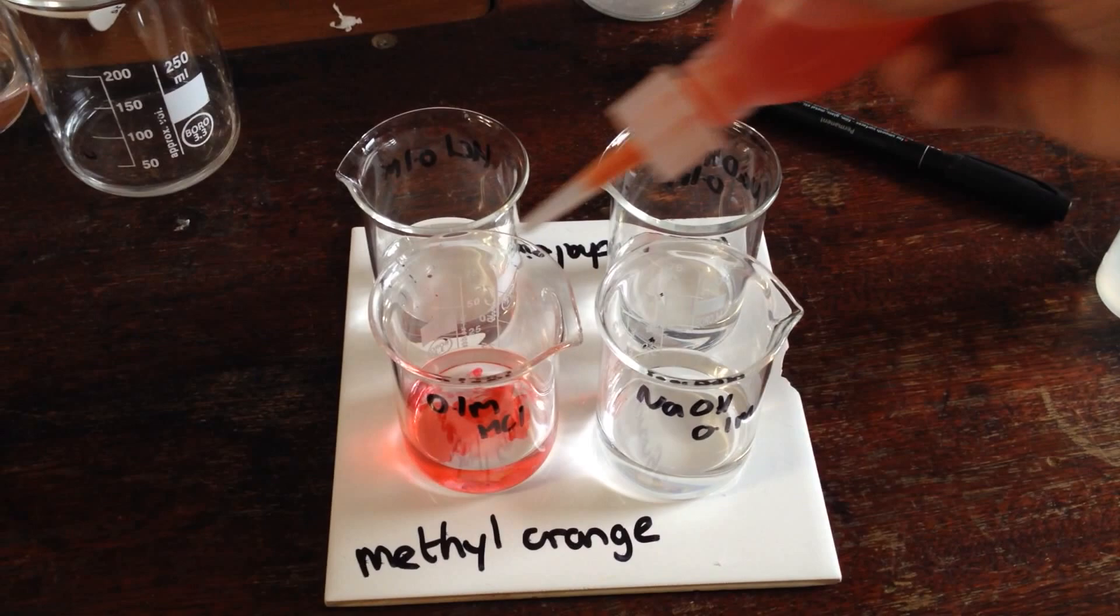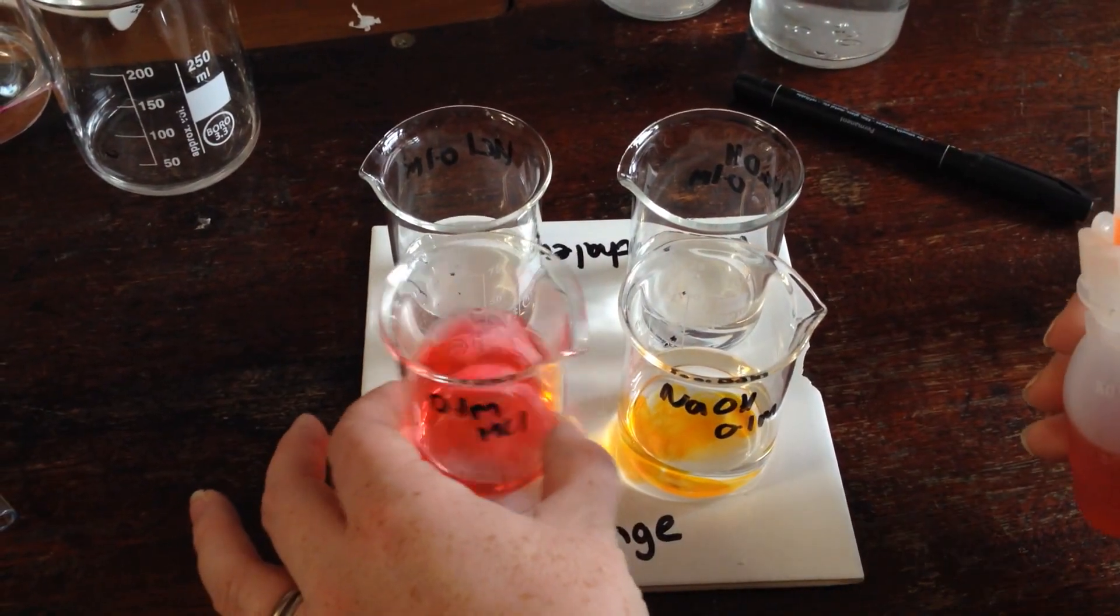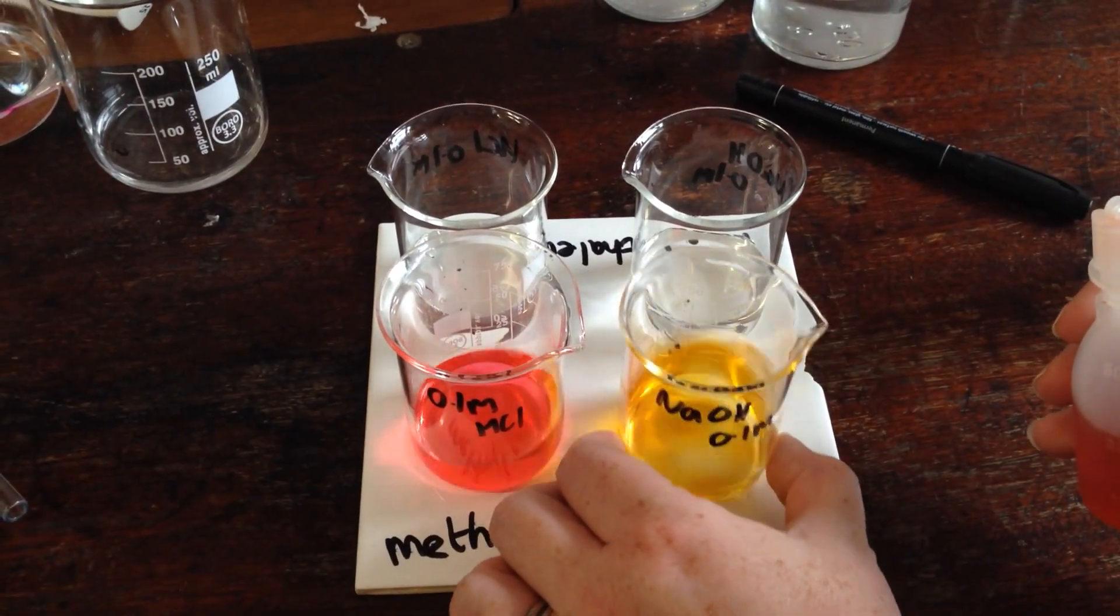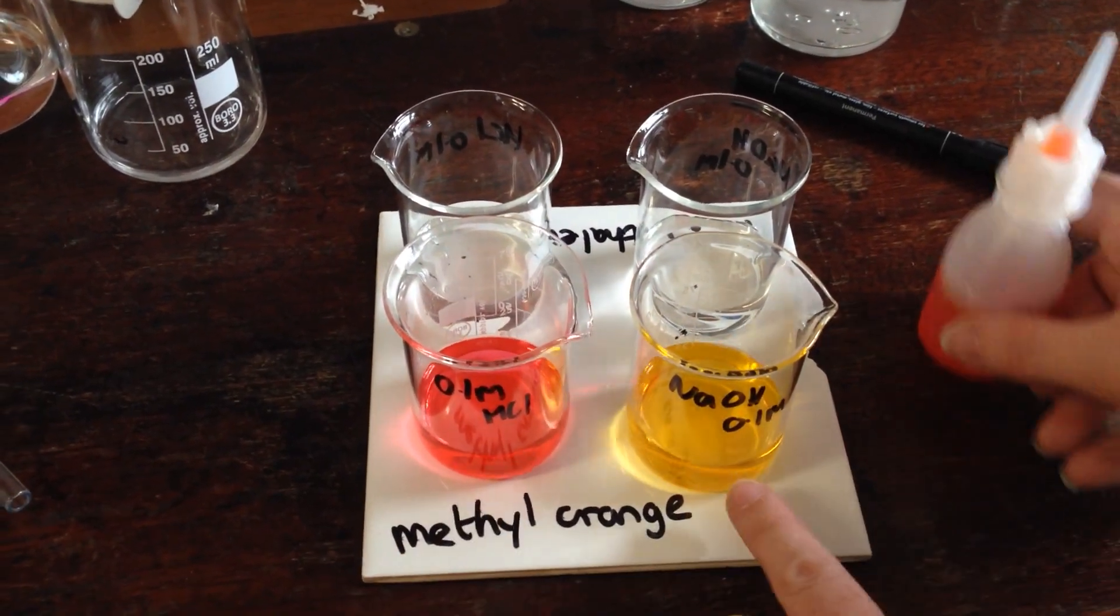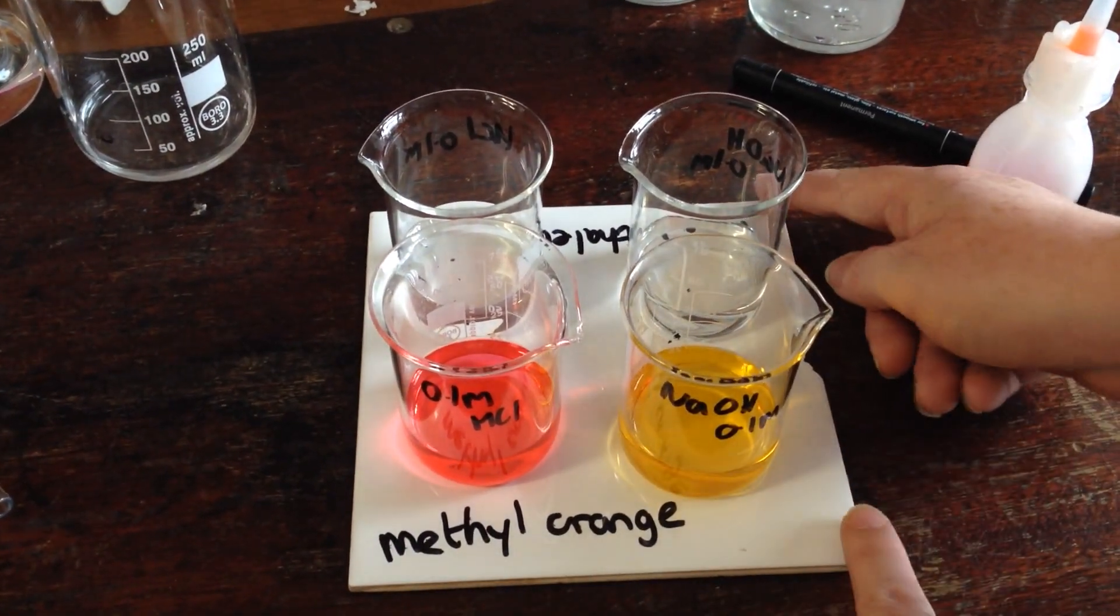I'm going to add in a few drops, give it a little swirl. You can see that methyl orange in acid is red and in alkaline is yellow.